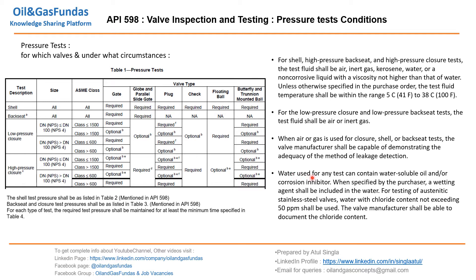Water used for any test can contain water-soluble oil or corrosion inhibitors when specified by the purchaser. A wetting agent shall be included in the water if specified in the purchase order. For testing of austenitic stainless steel, water with a chloride content not exceeding 50 ppm by volume shall be used, as specifically mentioned in the standard.